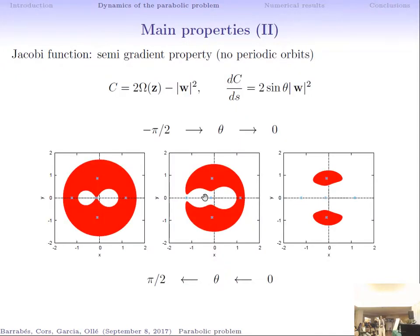We also have a Jacobi function — the same expression as in the circular restricted three-body problem — but here it is not constant; its time derivative has a specific expression giving a semi-gradient property. A key consequence is that there are no periodic orbits; the only invariant objects are the equilibrium points.